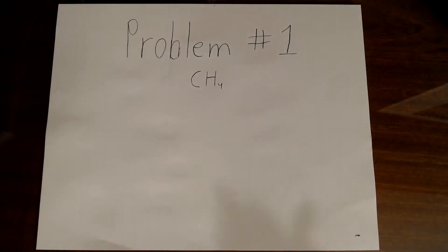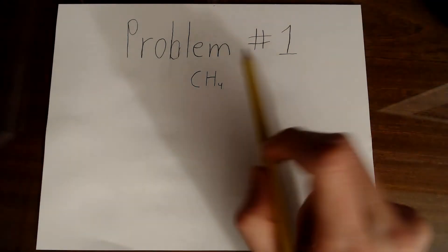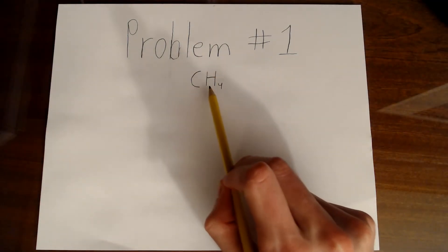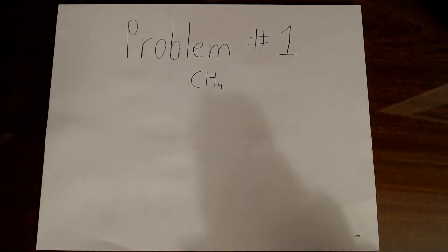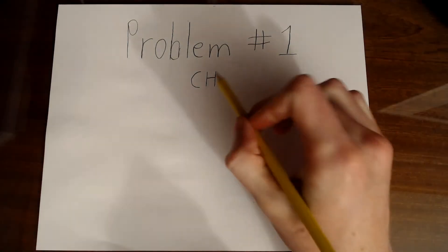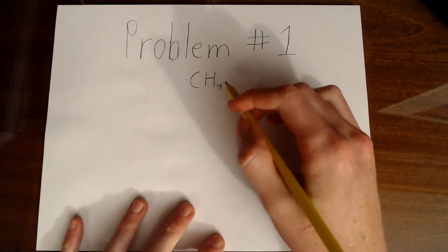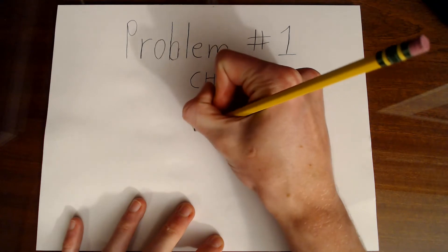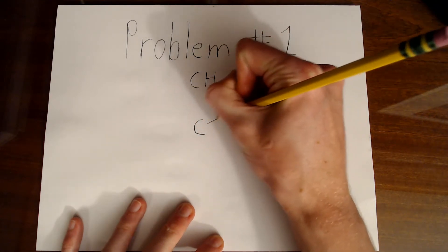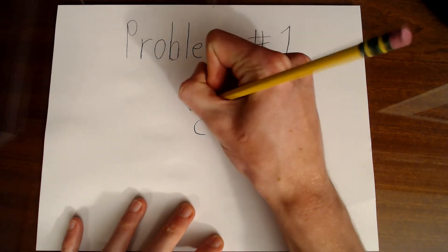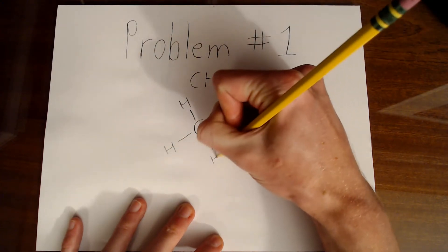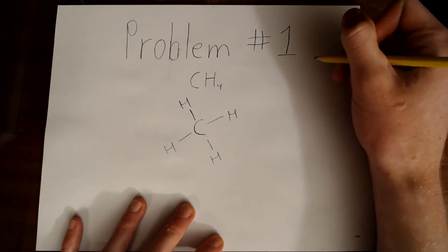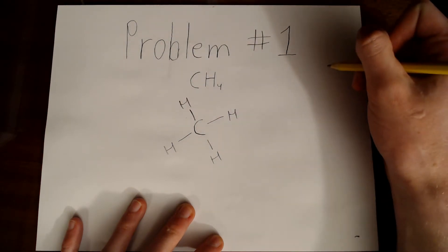For problem number 1, we're going to find the VSEPR structure of the molecule CH4, or in other words, the methane molecule. In order to solve this problem, you have to draw the Lewis structure for this molecule first. We have a carbon in the center, and we have 1, 2, 3, 4 hydrogens surrounding it, and this will be the Lewis structure for methane.